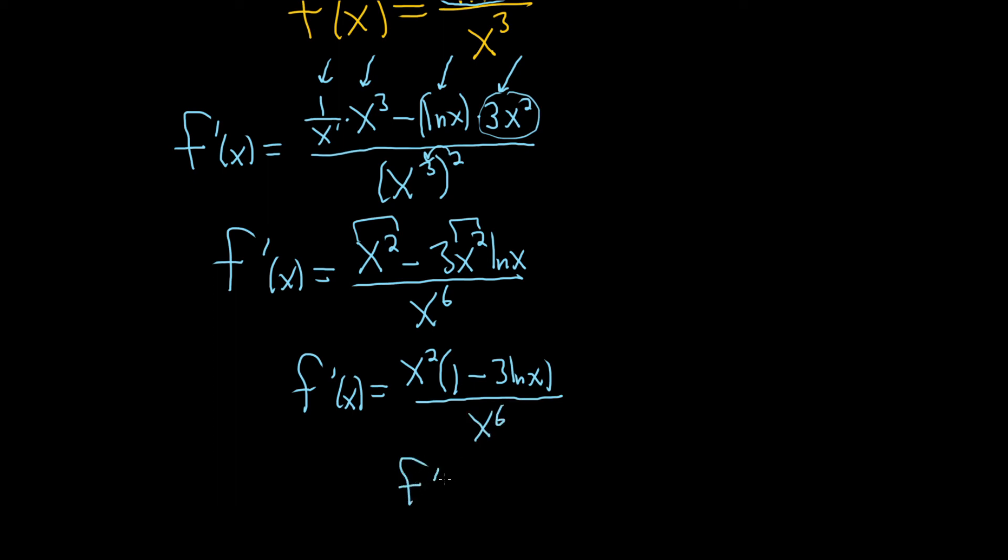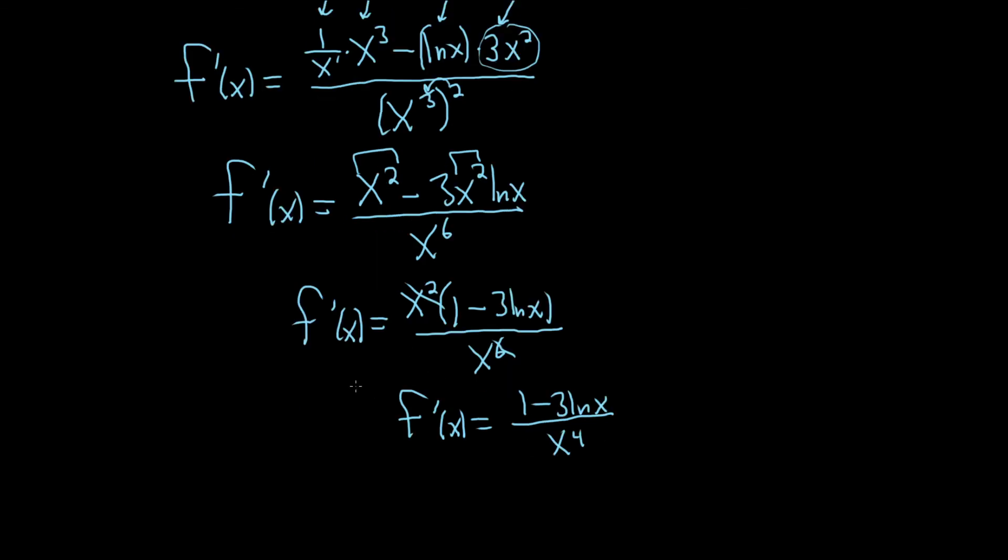So that means the derivative with respect to x. These cancel. So we get 1 minus 3 ln x. So we lose an x squared from the bottom. We had x to the 6. So we're left with x to the 4th. And that would be a better answer.